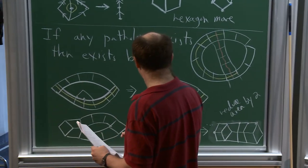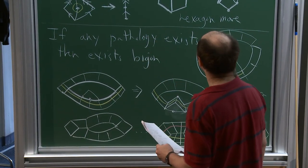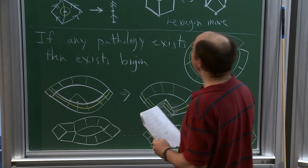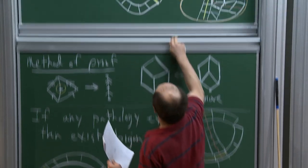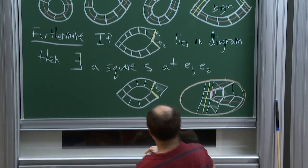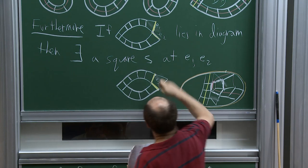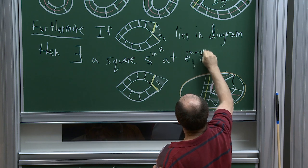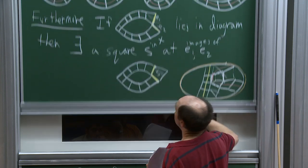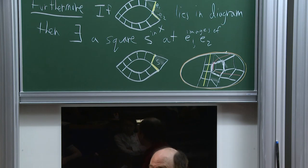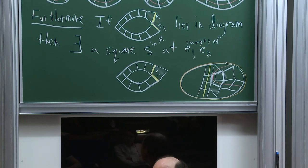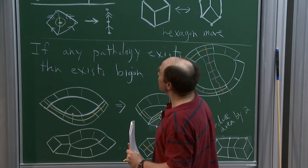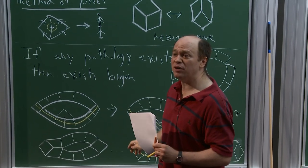Regarding the furthermore statement: you said if there is something in the diagram then there is a square S. The square S is in X at the images of E1 and E2. In other words, you could have put a square there and mapped it to X.